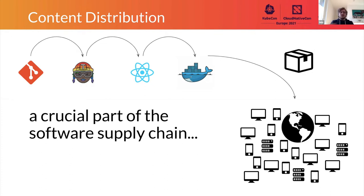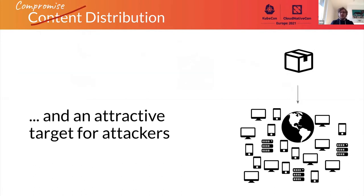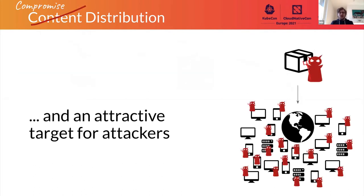So it should make sure that the software they intend the user to have is actually the software that they get. That is why this is a crucial part of the supply chain and also a very attractive target for attackers, because if the attackers compromise the content distribution, they can have a huge impact on millions of users potentially. And this also happens in the real world, and Joshua will talk a little bit about when this happened before.